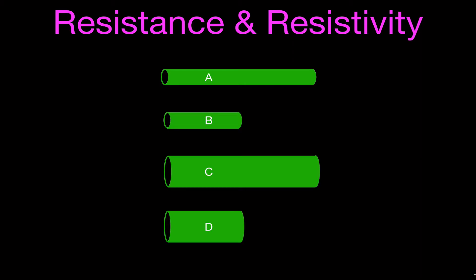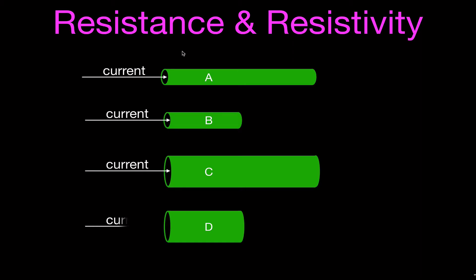Here we have four different conductors — four wires: A, B, C, and D. They're all made of the same material, they're all at the same temperature, and they all have a current flowing through them. This is a good qualitative way to think about resistance. We would like to know which wire offers the greatest resistance to the flow of charge, and which one would offer the least resistance — otherwise known as the current.